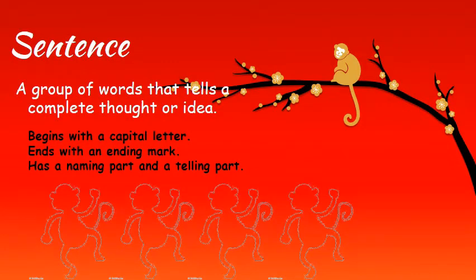What's a sentence? A sentence is a group of words that tells a complete thought or idea. It has a naming part and a telling part. It begins with a capital letter and ends with an ending mark. For example, 'My dog is big.' It begins with a capital letter and it ends with an ending mark.